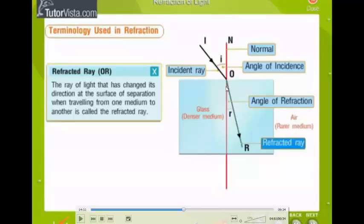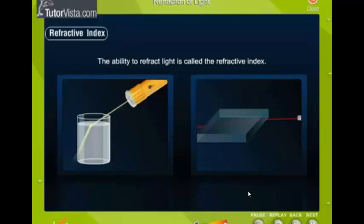And finally, the refracted ray is the ray of light that has changed its direction due to the difference in the optical densities as it travels, light travels from the one medium to the other. The ability to refract light is called the refractive index.